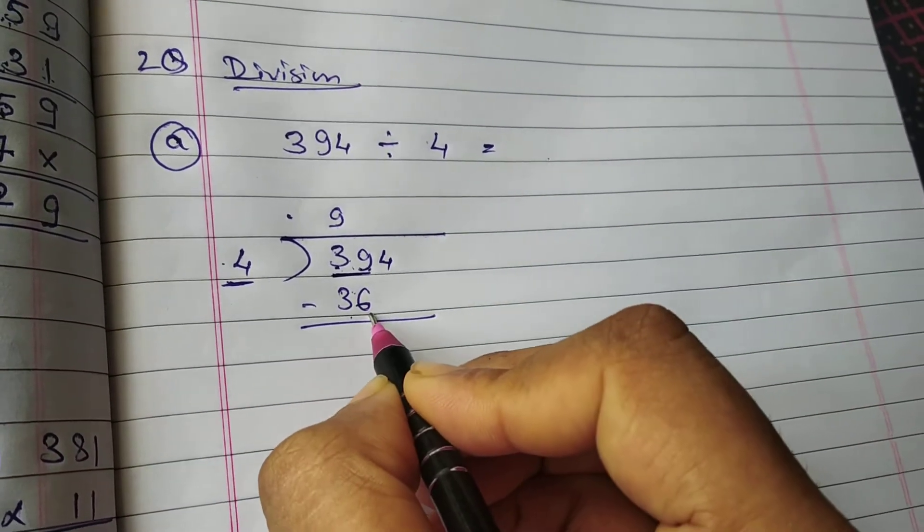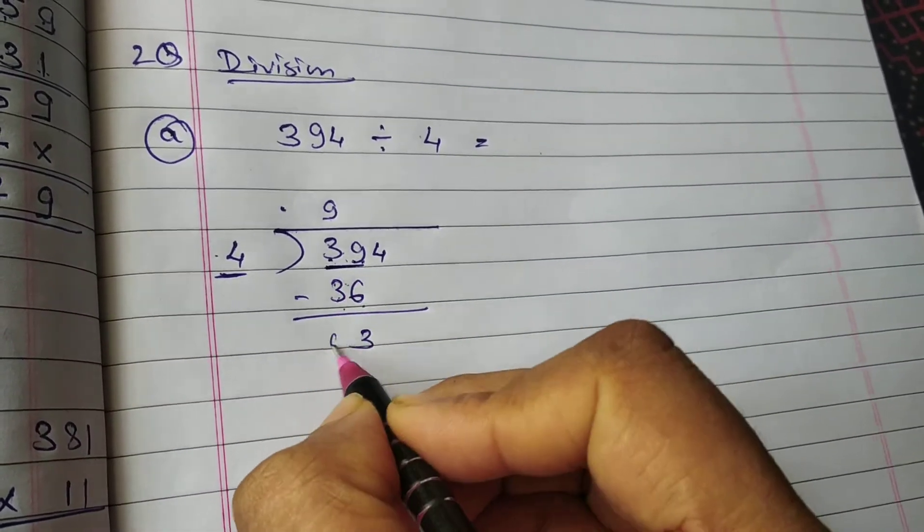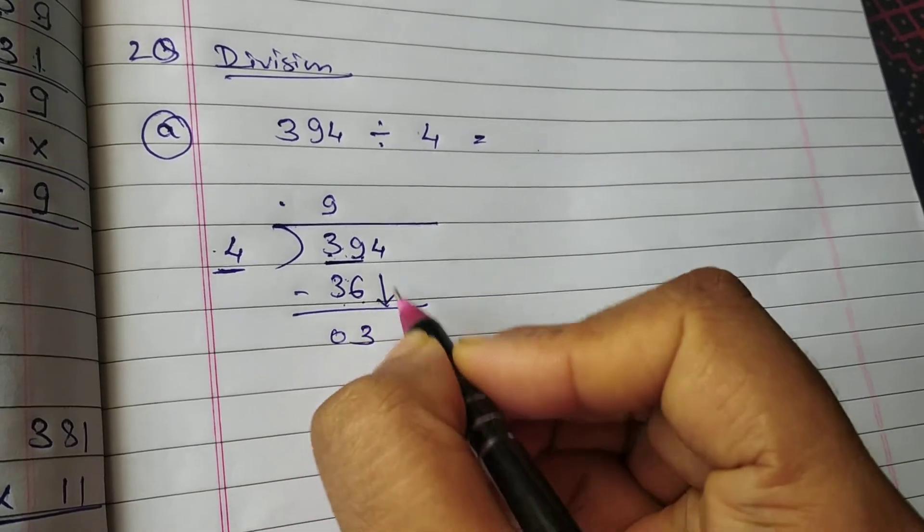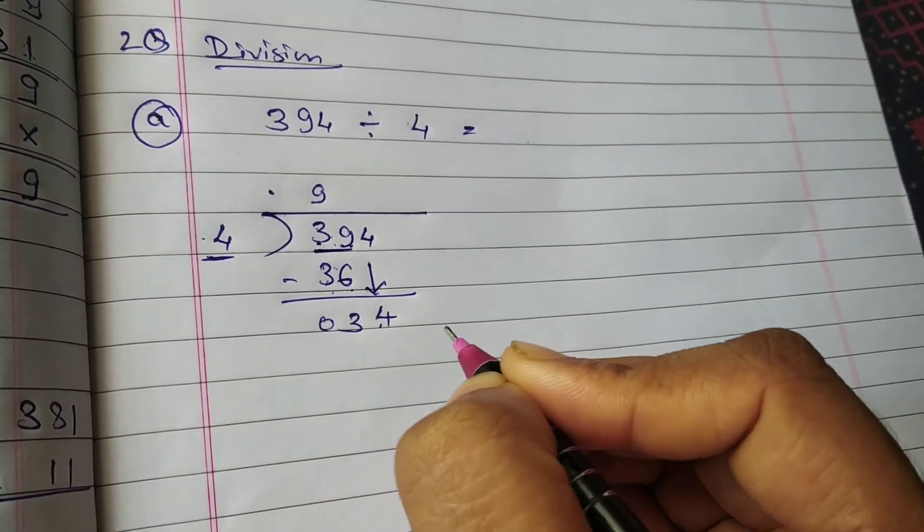Okay, now 9 minus 6 is 3. 3 minus 3 is 0. Now take the next digit down. Okay, so here it will be 34.